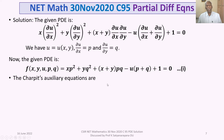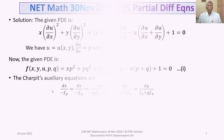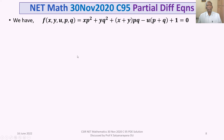The Charpitt's auxiliary equations are: dx/(−F_p) = dy/(−F_q) = du/(−pF_p − qF_q) = dp/(F_x + pF_u) = dq/(F_y + qF_u). We now compute the required partial derivatives F_p, F_q, F_x, F_y, and F_u.